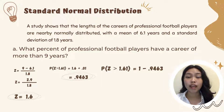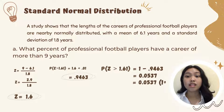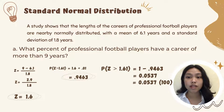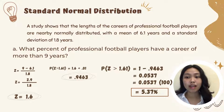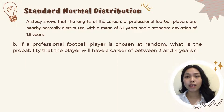1 minus 0.9463, which is then equal to 0.0537. Since percent ang hinahanap sa problem, i-multiply natin ngayon si 0.0537 sa 100 para makuha natin yung percentage. The result will be 5.37 percent, meaning na out of the professional football players, 5.37 percent lang sa kanila ang may career for more than 9 years. So ngayon na nakuha na natin yung sagot sa first problem, sagutan naman natin yung second problem.